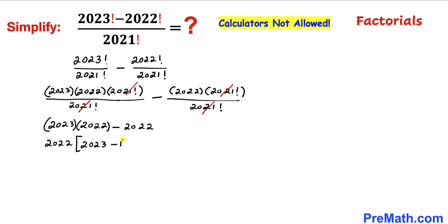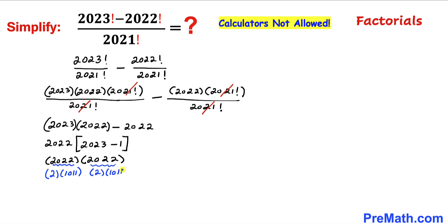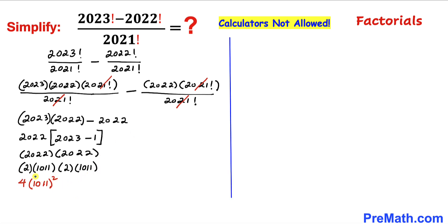Now we can see 2022 can be written as 2 times 1011, and likewise (2023 minus 1) equals 2022, which is also 2 times 1011. So we have 2 times 1011 times 2 times 1011. Multiplying: 2 times 2 gives us 4, and 1011 times 1011 gives us 1011 squared.